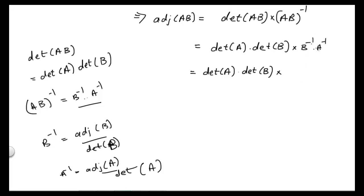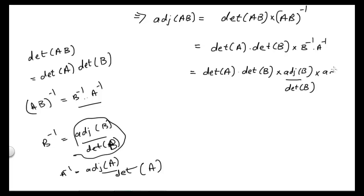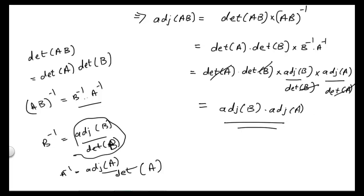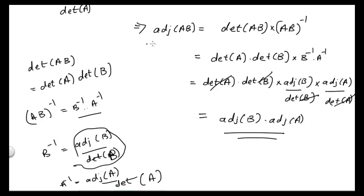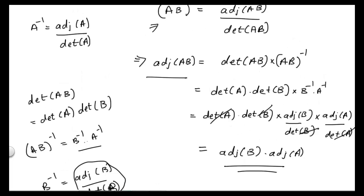So B inverse can be replaced by adjoint of B divided by determinant of B, and A inverse can be replaced by adjoint of A divided by determinant of A. We can then cancel determinant of A with determinant of A, and determinant of B with determinant of B. The result is adjoint of B times adjoint of A, which is what we wanted to prove: adjoint of AB is equal to adjoint of B times adjoint of A.